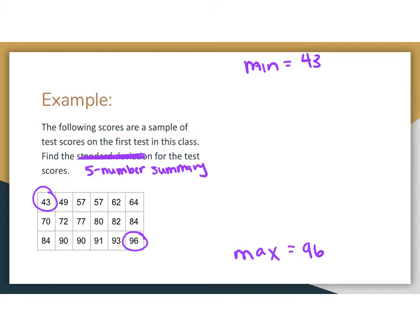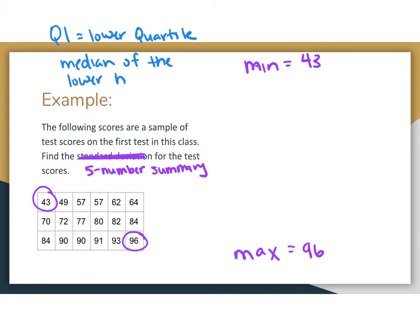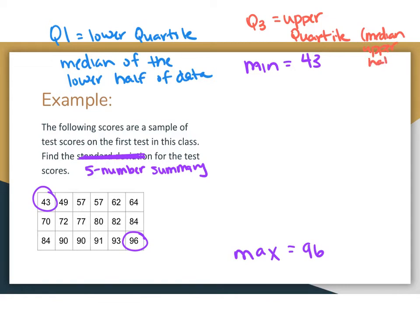To find a quartile, understand this: Q1 is the lower quartile — it is the median of the lower half of the data. Q3 is the upper quartile, and it is the median of the upper half of the data. So all we're doing is finding a bunch of medians.